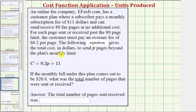So the important thing to recognize about our equation, c equals 0.2p plus 11, is that p is not equal to the number of pages sent or received. p is equal to the number of pages beyond the monthly plan's limit of 80 pages.